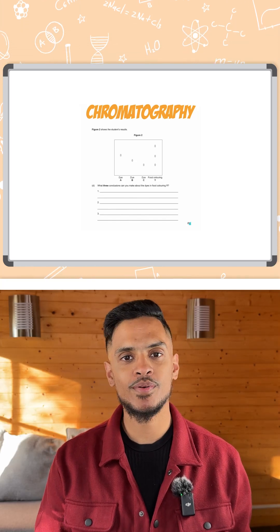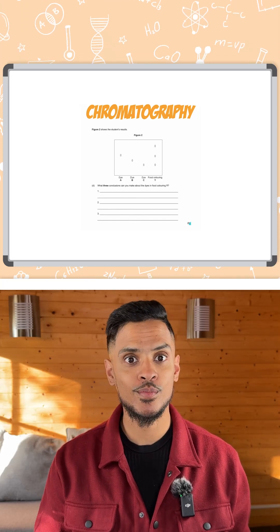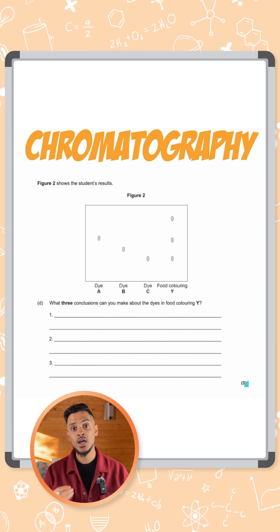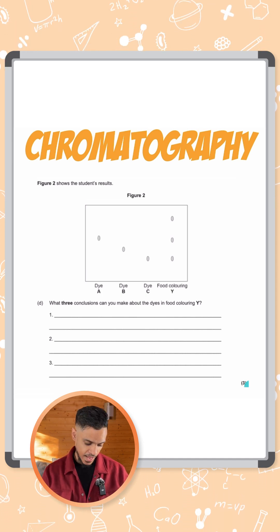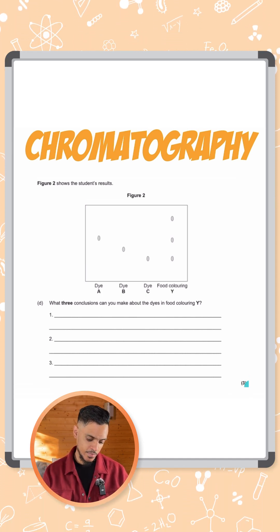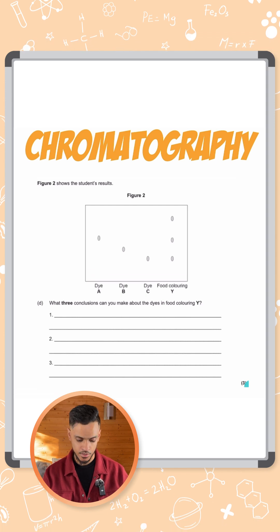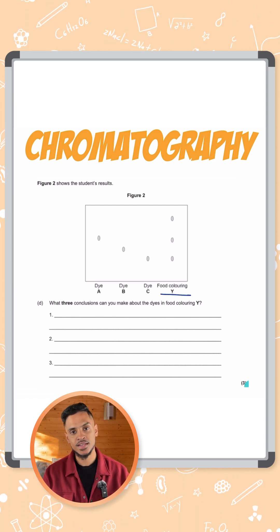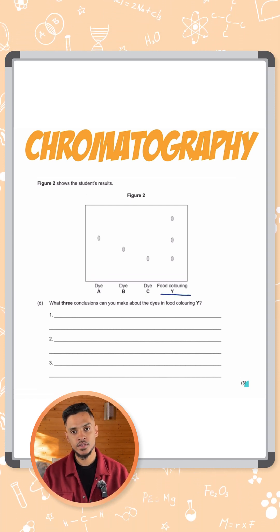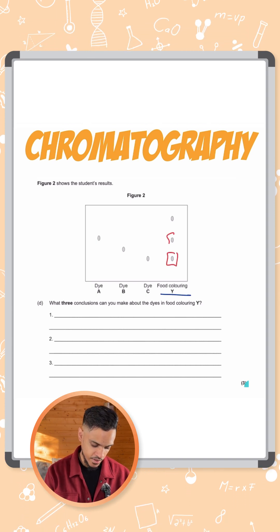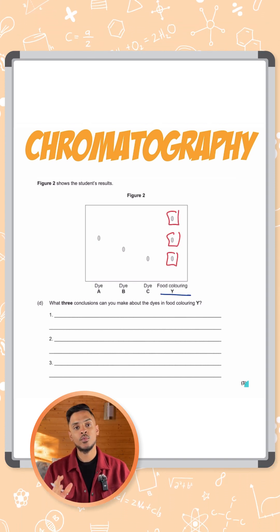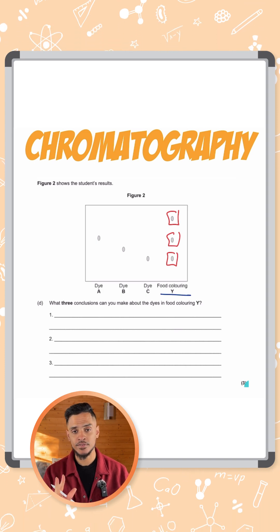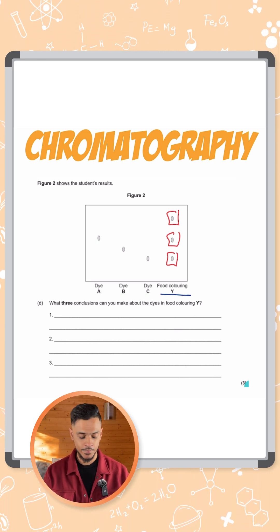We have a three-marker here on the required practical on chromatography. We have a chromatogram here — that's the final result after chromatography has taken place. The question asks: what three conclusions can you make about the dyes in the food colouring? We've got the food colouring here on the right-hand side, and after chromatography it has split up into these three dyes. So one conclusion we can make is that the food colouring is made out of three different dyes, because there are three different spots there.